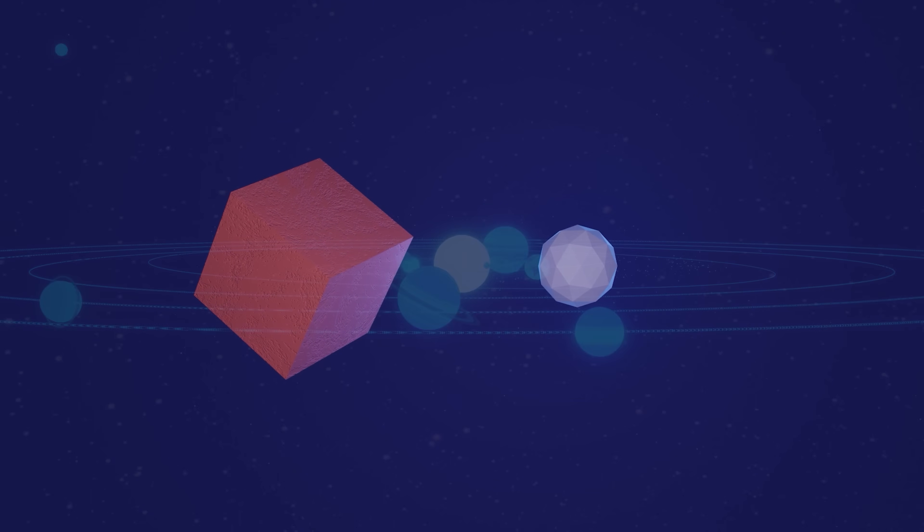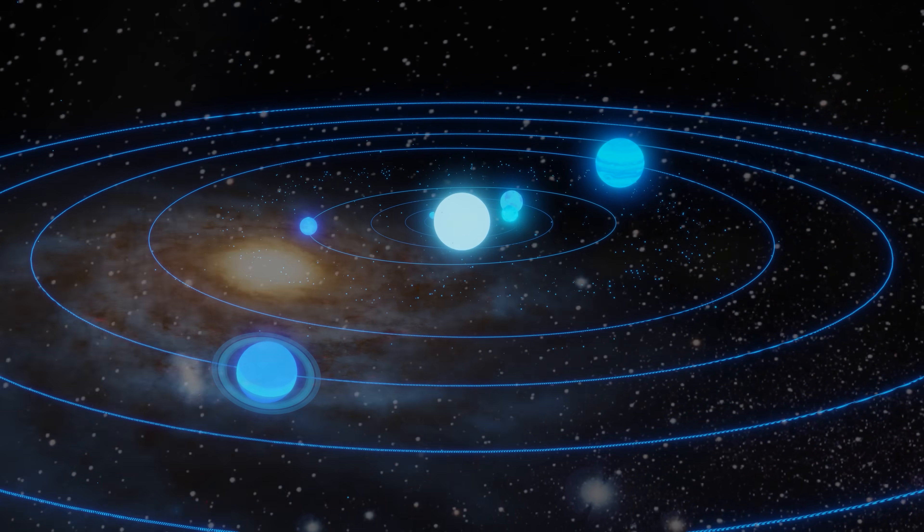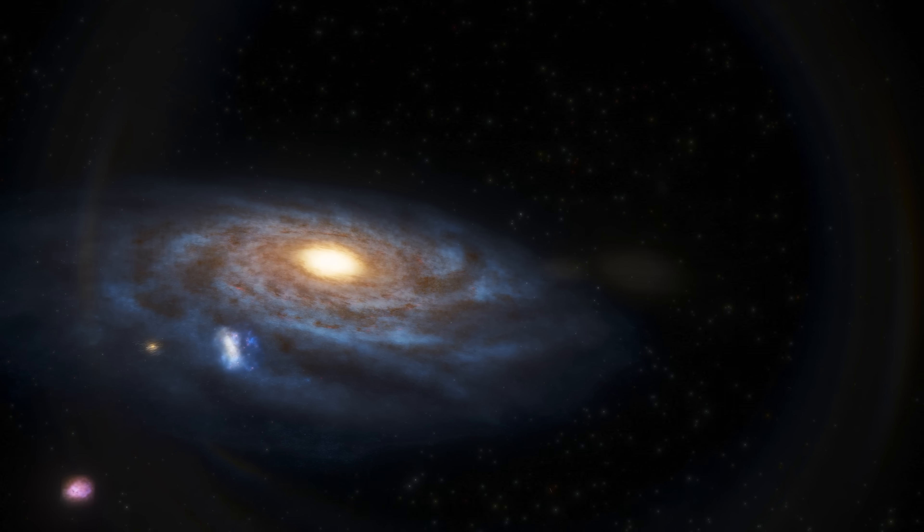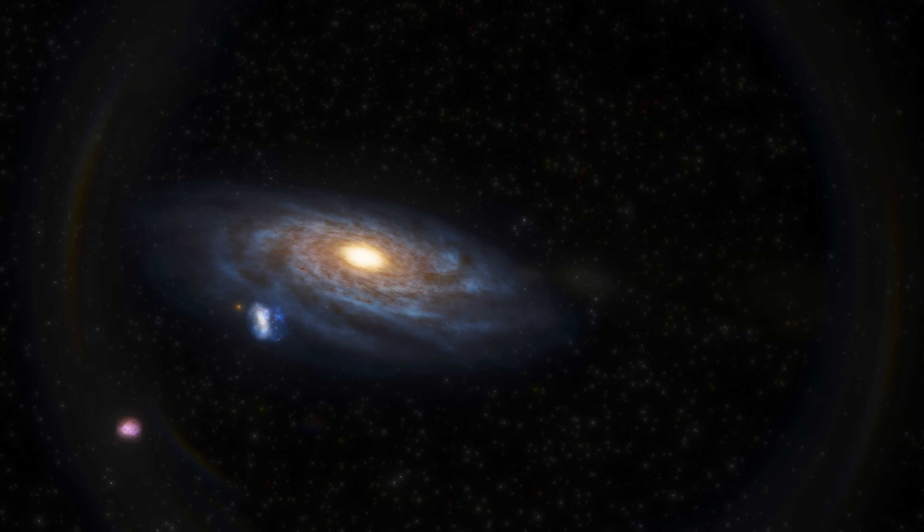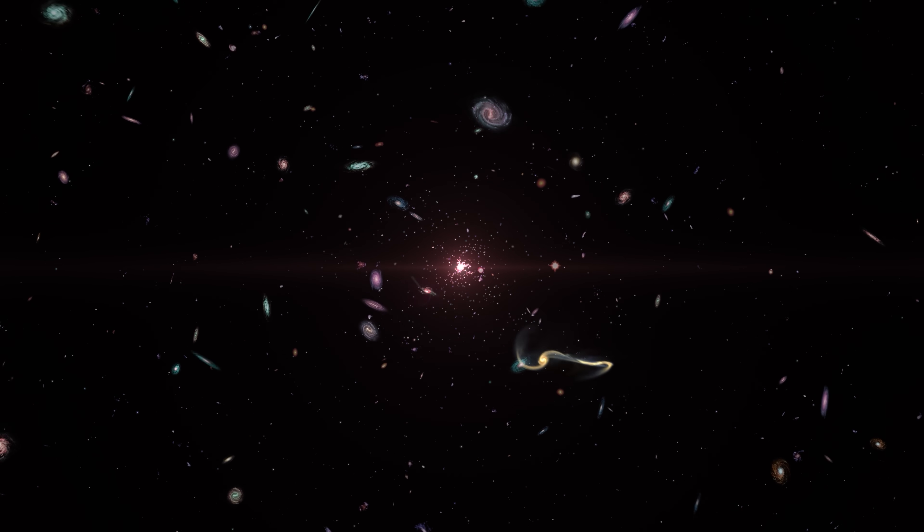One of the first things you might learn in a physics class is that gravity is an attractive force between two objects, whose strength is proportional to each of their masses. Gravity keeps planets locked in orbit around the Sun, it keeps stars grouped together in the Milky Way, and it even attracts galaxies together to form galaxy clusters and superclusters.